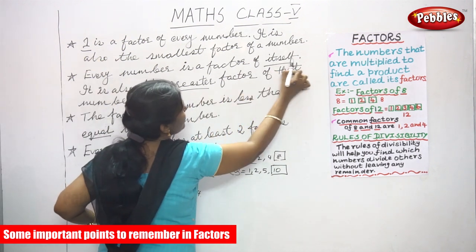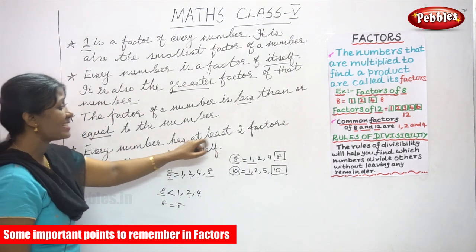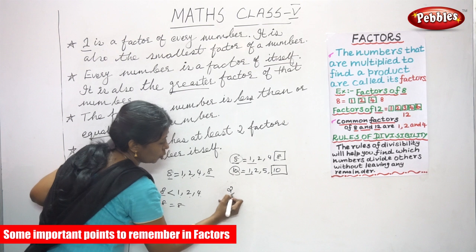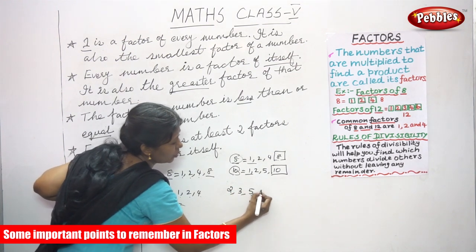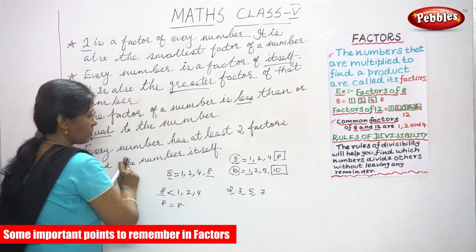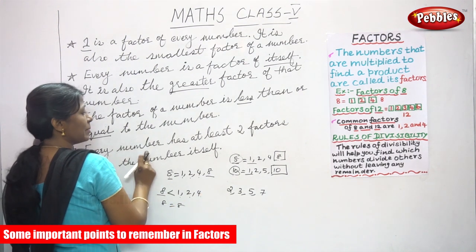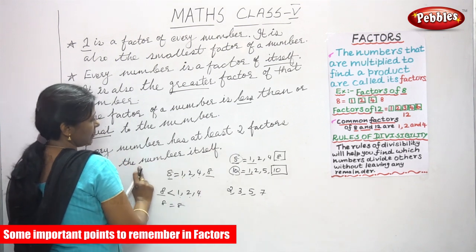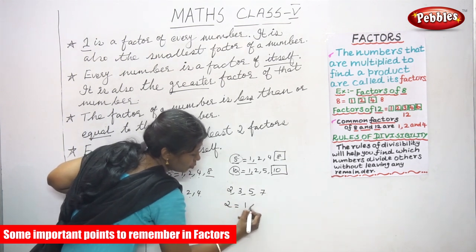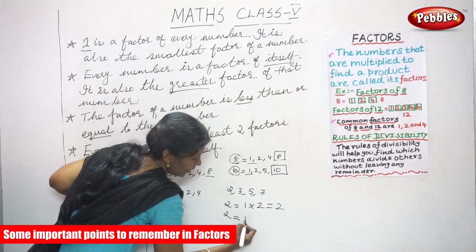The last point to remember: every number has at least two factors — one and the number itself. For example, take two, three, five, and seven. Finding the factor of two: one multiplied by two equals two, so the factors of two are one and two.